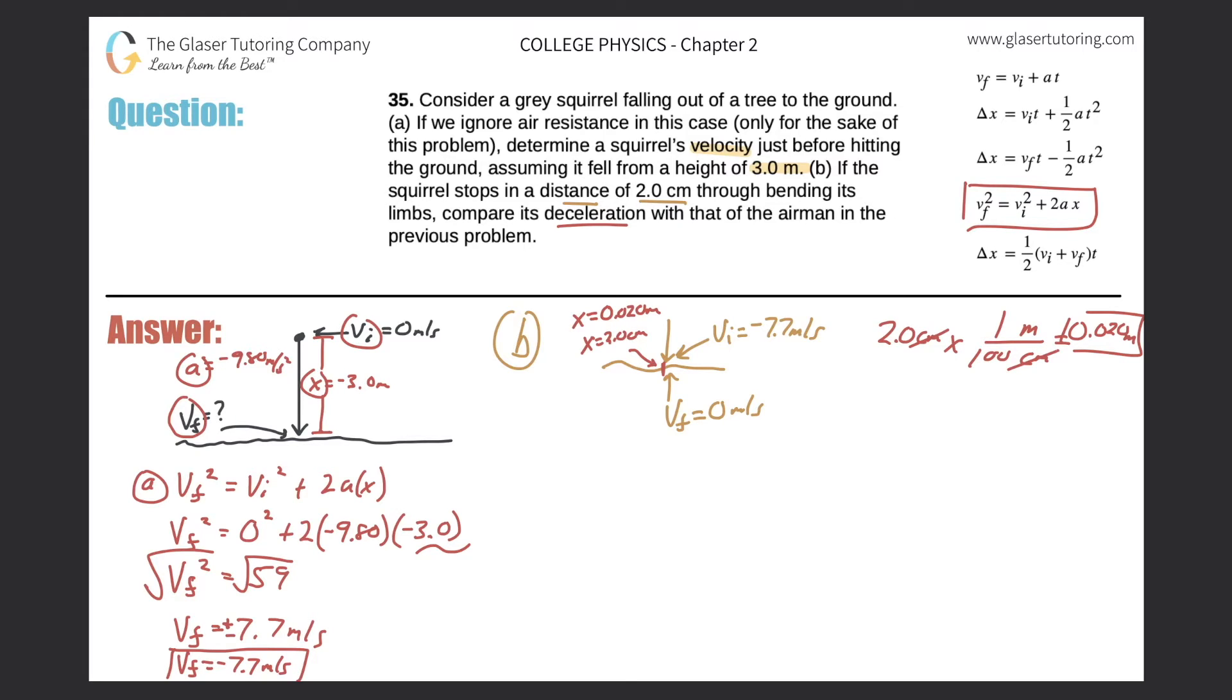I need to consider a formula - we're trying to find A. Consider a formula that relates displacement, acceleration, initial, and final velocities. It's the same exact equation we just used. Final velocity squared is equal to the initial velocity squared plus 2 multiplied by the acceleration, multiplied by the displacement.